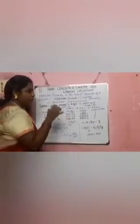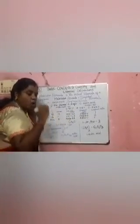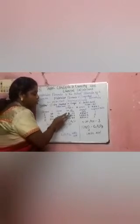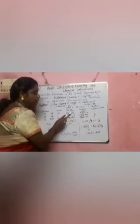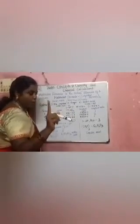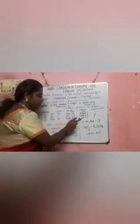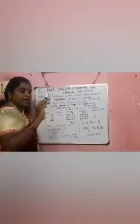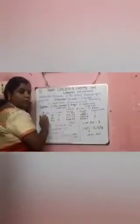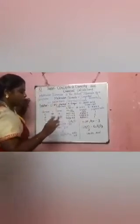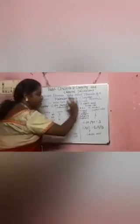Now find the simplest ratio. Compare all the relative number values and identify the smallest, which is 3.3. Divide all values by 3.3: carbon gives 3.3/3.3 = 1, hydrogen gives 6.6/3.3 = 2, oxygen gives 3.3/3.3 = 1. The ratio is 1:2:1, so the empirical formula is CH₂O.